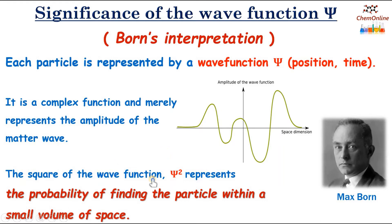According to Max Born, the square of the wave function ψ² represents the probability of finding the particle within a small volume of space. So only ψ² has any physical significance.